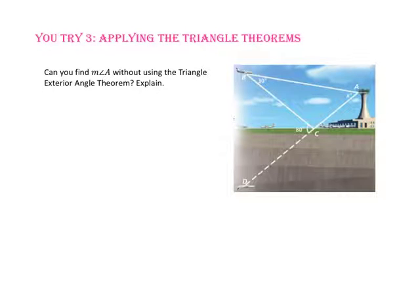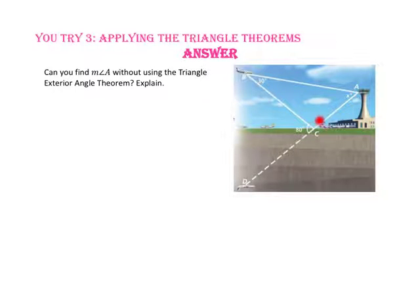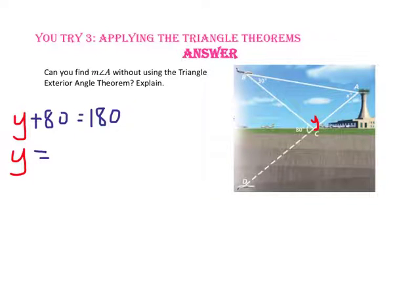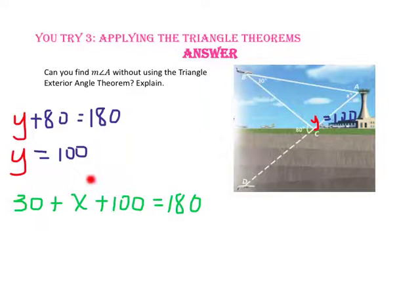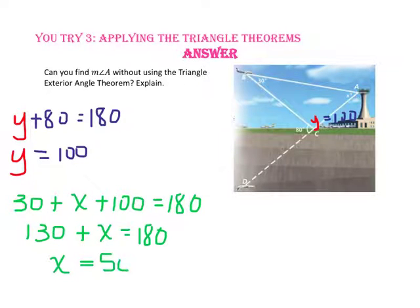Pause the video and do U-try number 3. Can you find the measure of angle A without using the triangle exterior angle theorem? Yes — we know measure of angle BCD plus measure of angle BCA equals 180, so 80 plus Y equals 180, giving Y equals 100. Then since angle B plus angle A plus angle BCA equals 180, we write 30 plus X plus 100 equals 180. Combining like terms gives 130 plus X equals 180, so X equals 50 — the same answer.